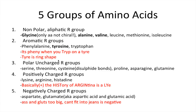For the polar uncharged group, you've got serine, threonine, cysteine — which includes disulfide bonds — proline, asparagine, and glutamine. And then the positively charged R groups are lysine, arginine, and histidine.